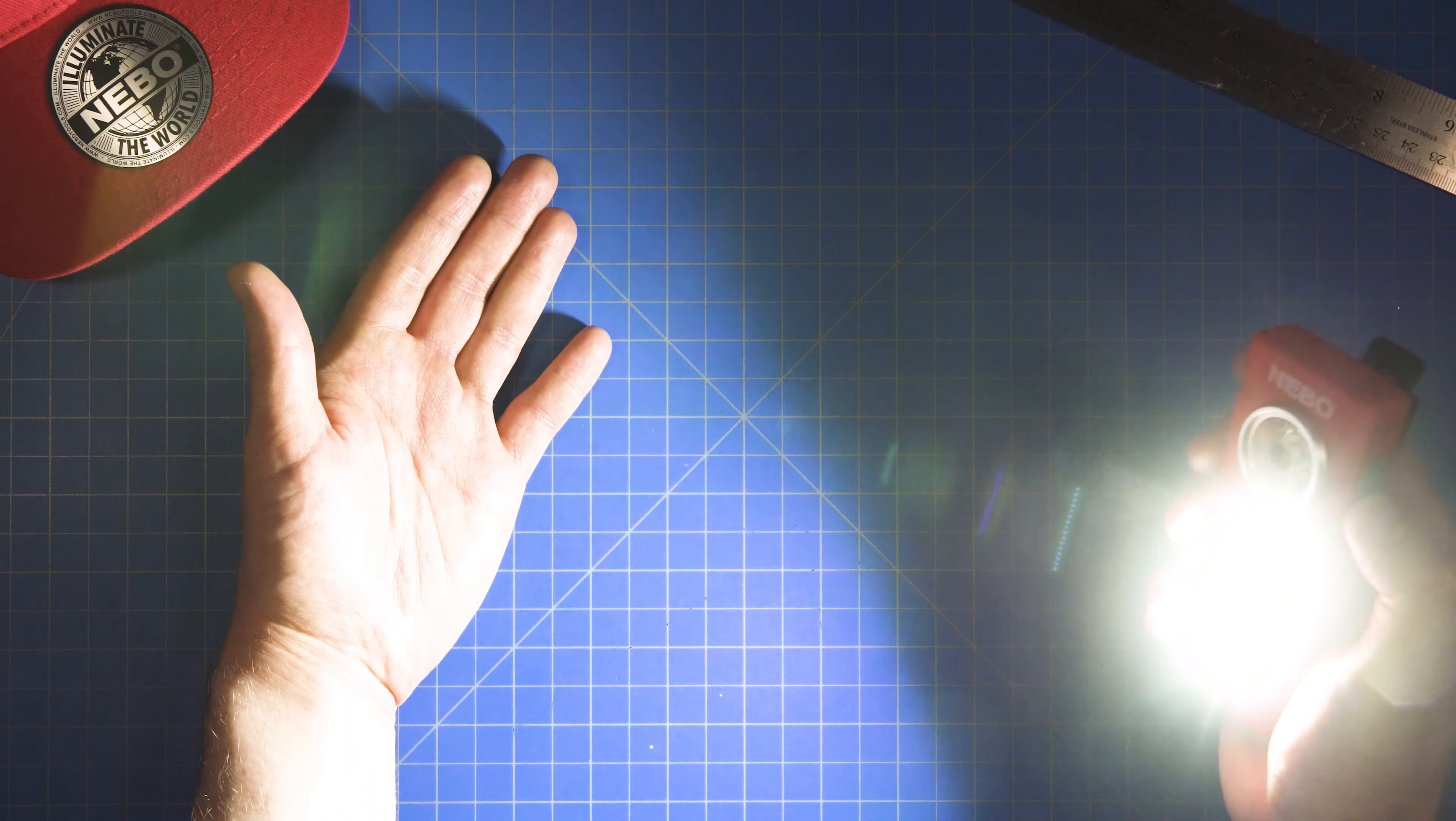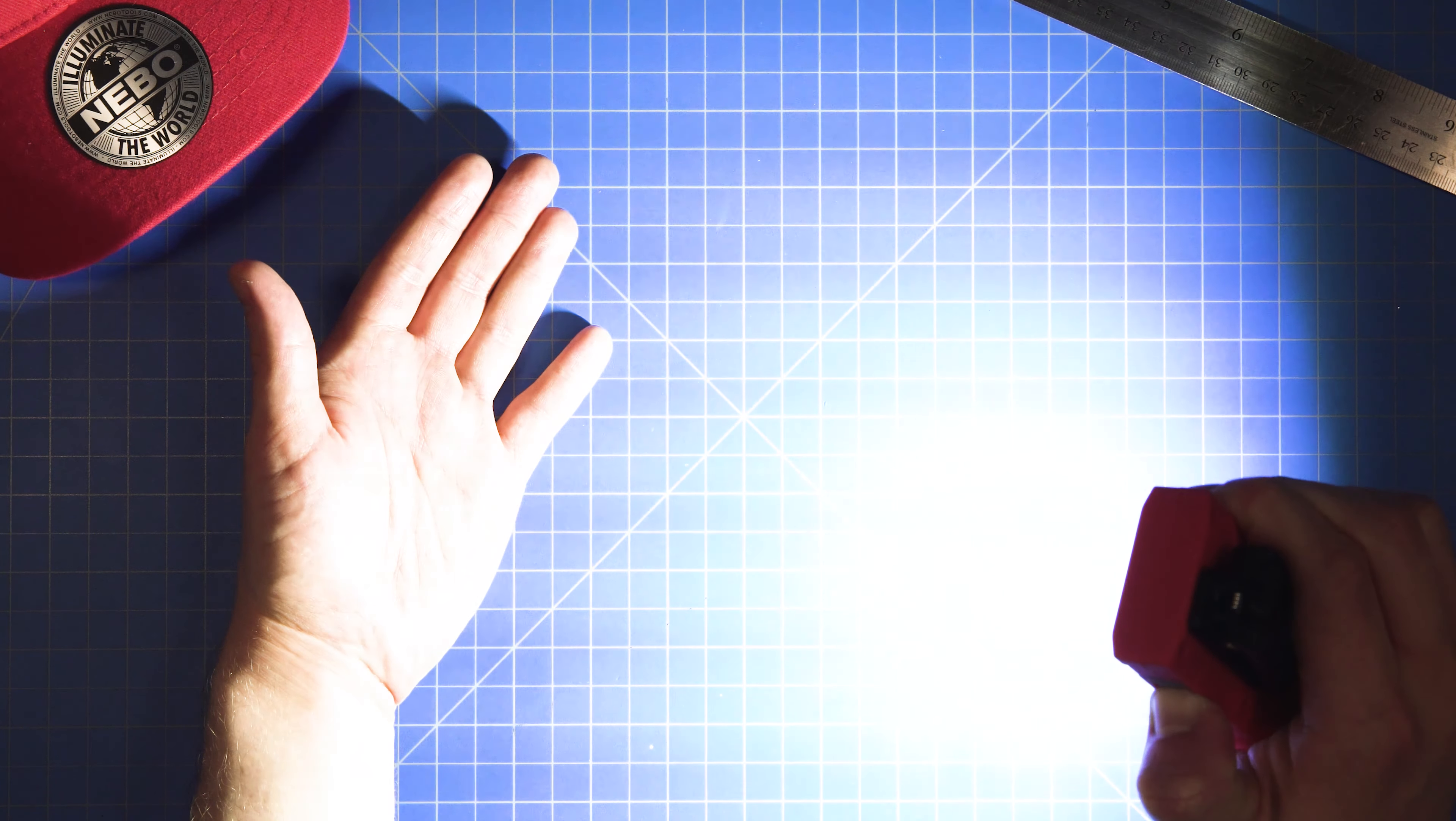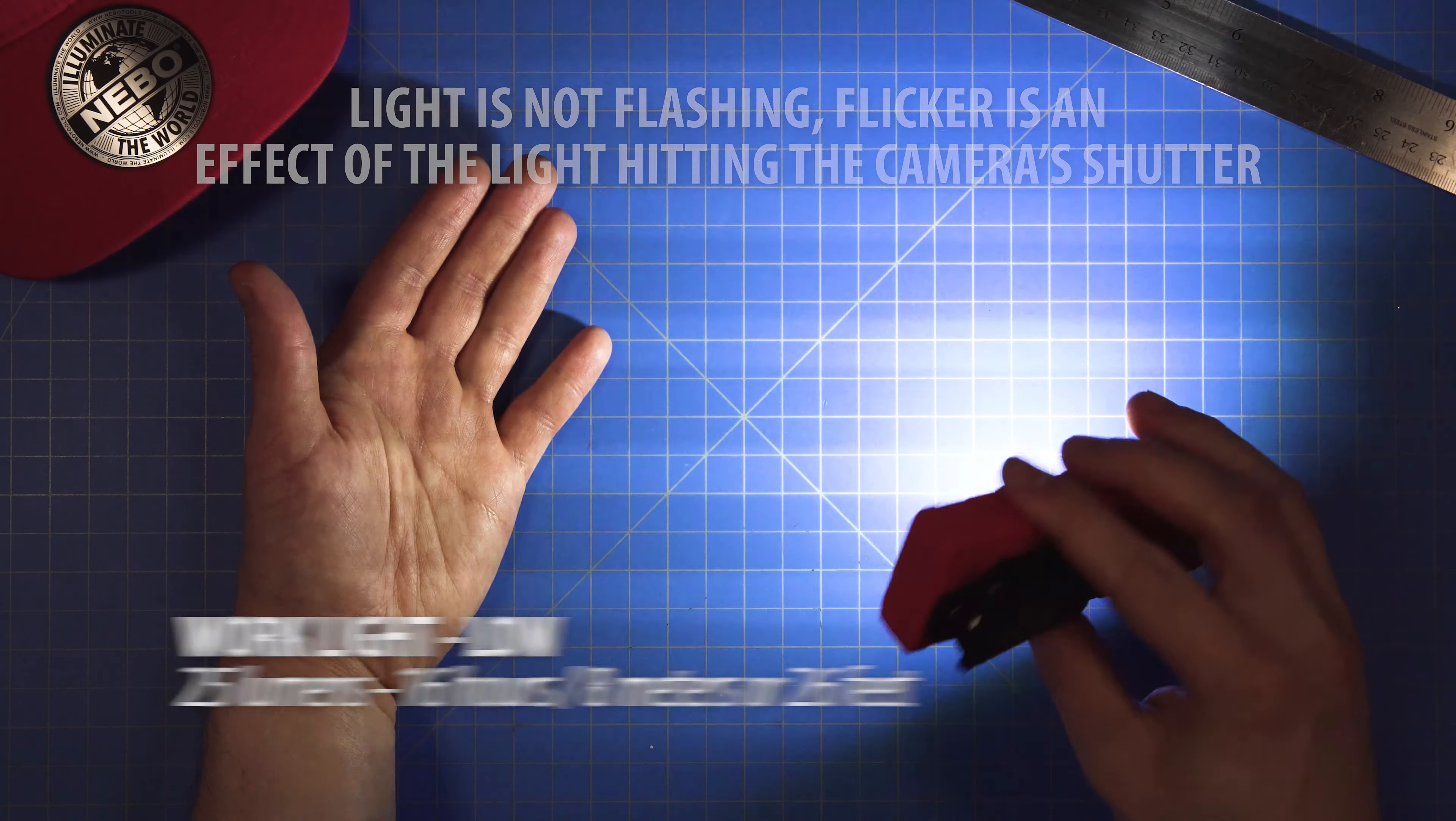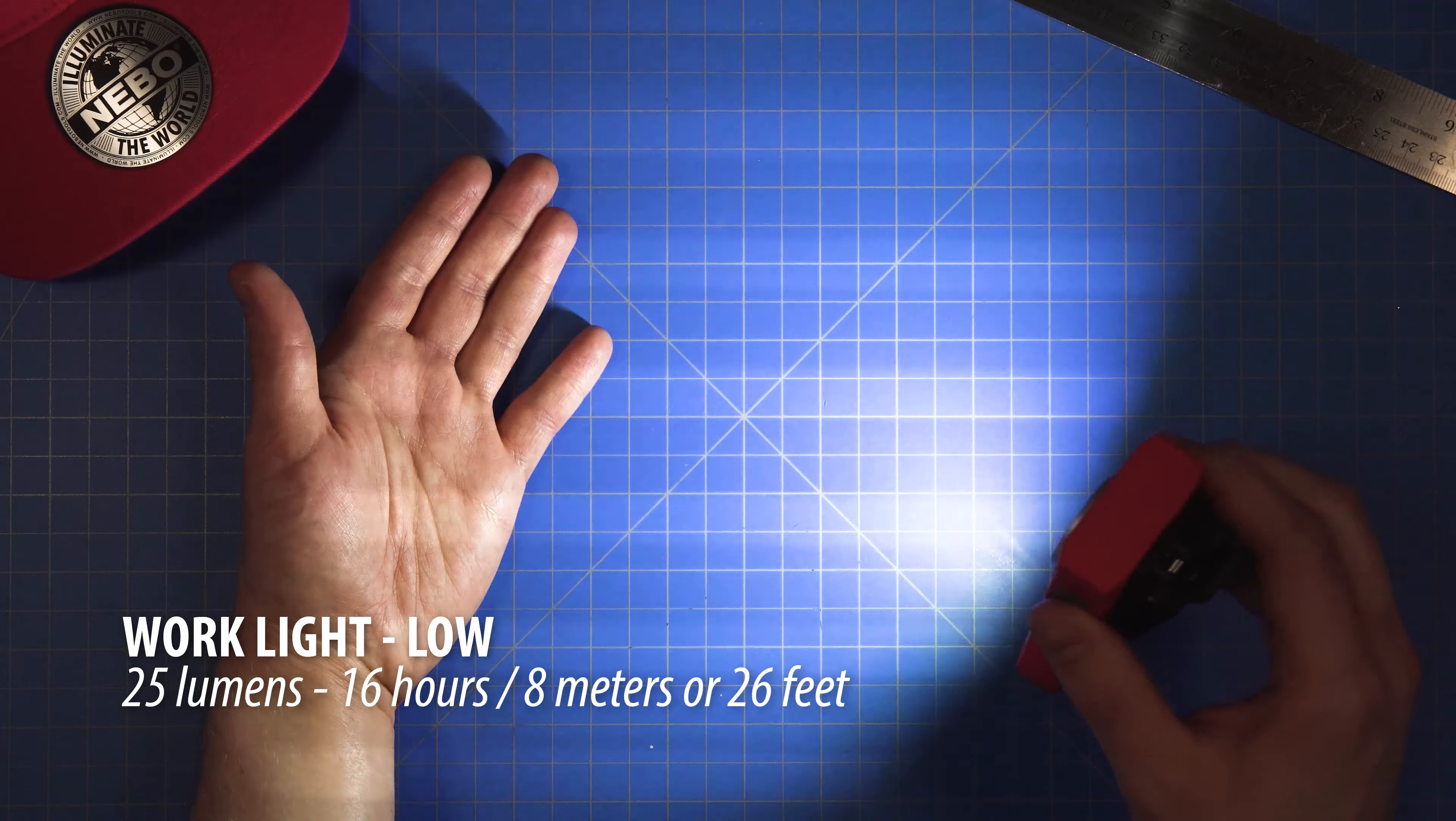The work light can also be dimmed by holding the button down. Once you've reached the lowest setting, indicated by a flash, the work light is up to 25 lumens shining at a distance of 8 meters or 26 feet for 16 hours.